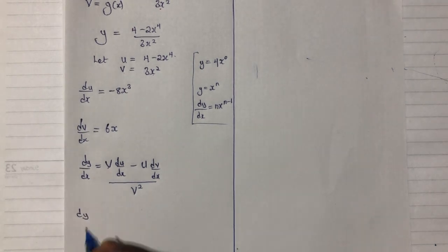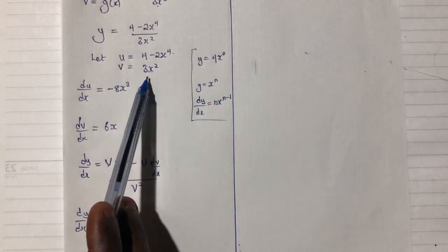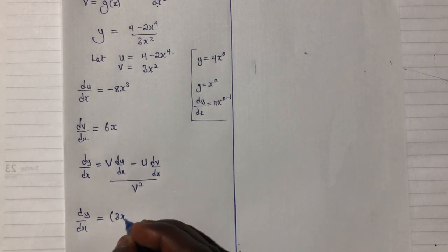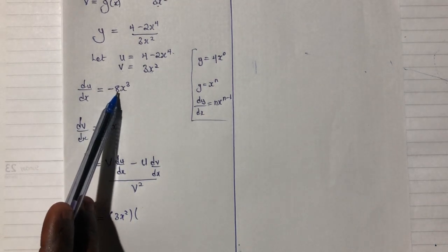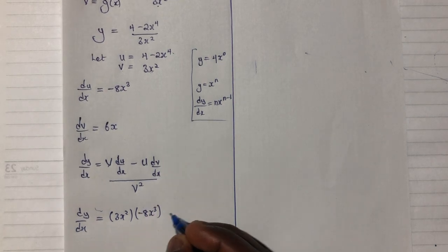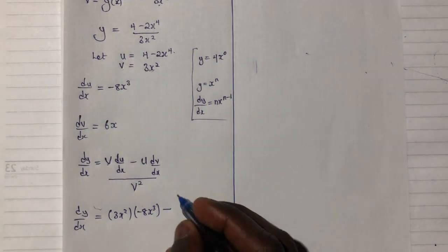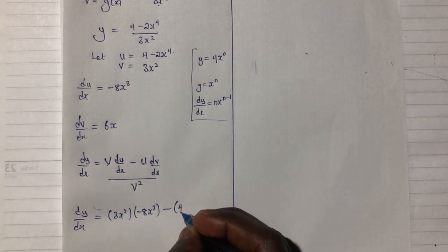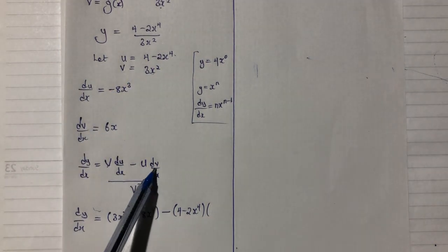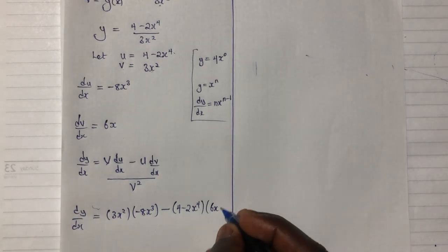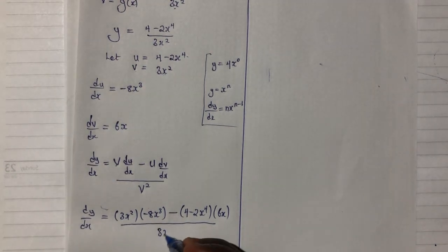So we have 3x squared multiplying minus 8x cubed, minus u which was (4 minus 2x) raised to the power 4, multiplying the derivative of v which was 6x. And we divide the whole result by v squared, which is (3x squared) squared.